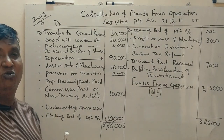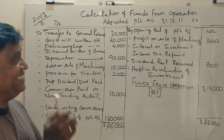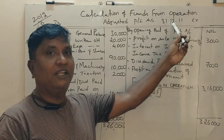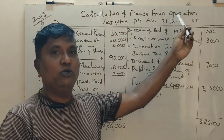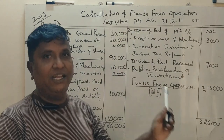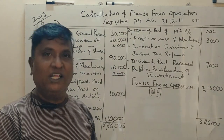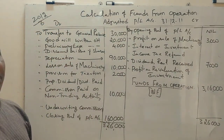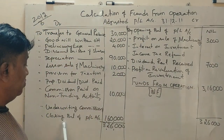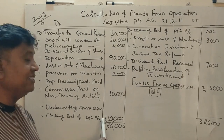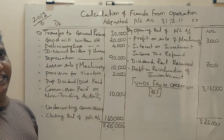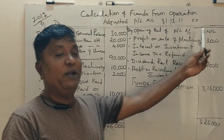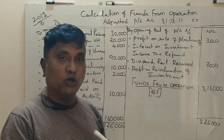Now the important date is 31st December 2011. To prepare the model, the problem uses the closing balance of the profit and loss account minus the opening balance of the profit and loss account.